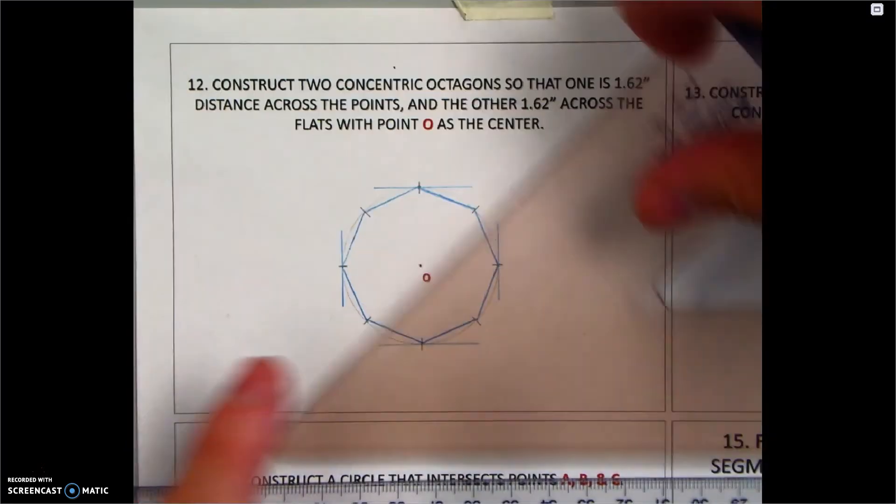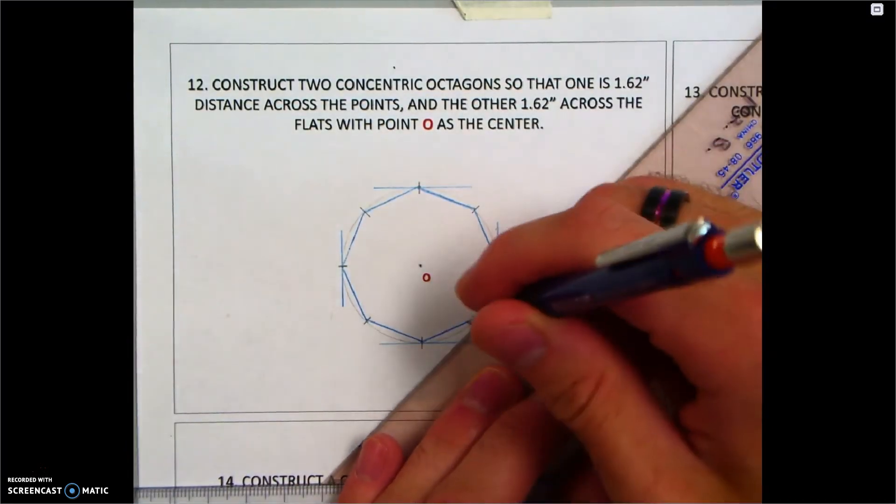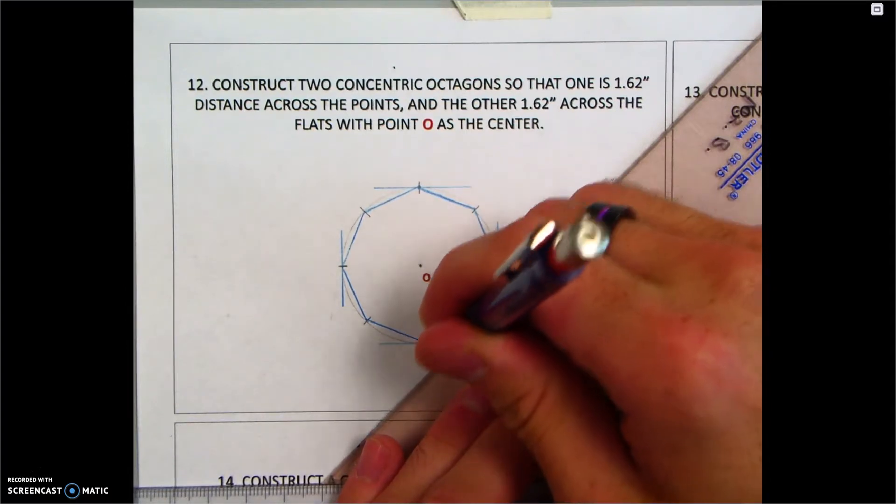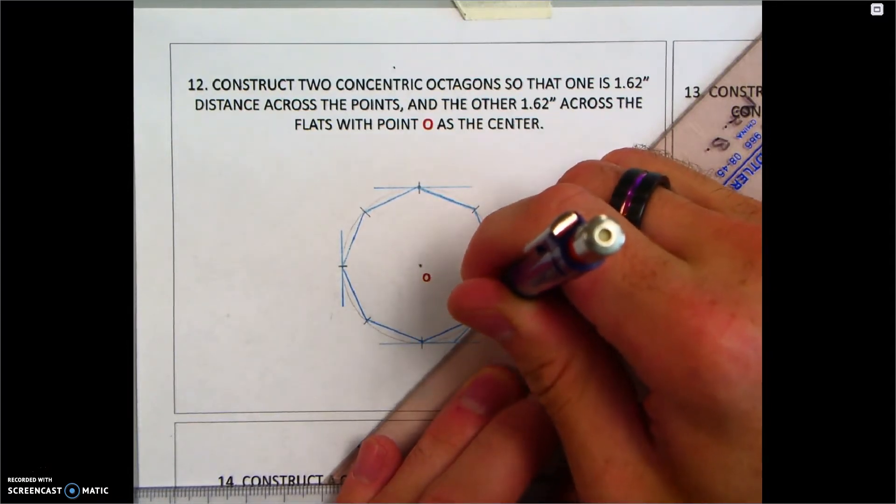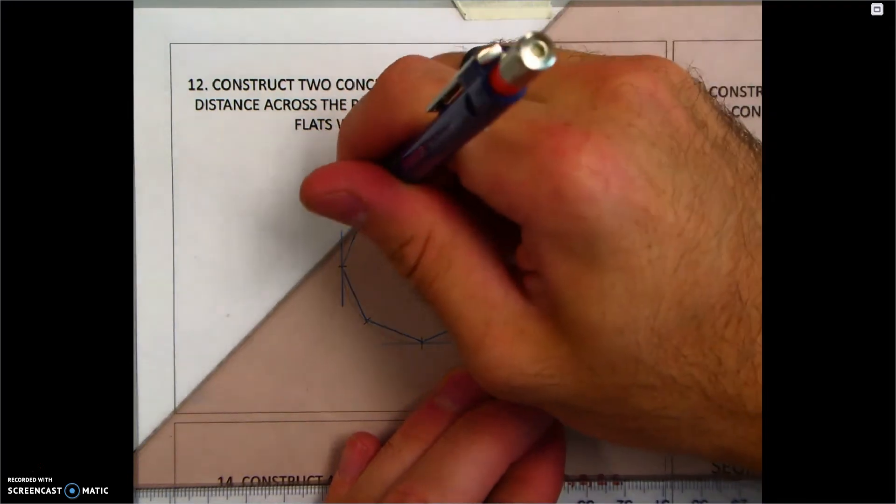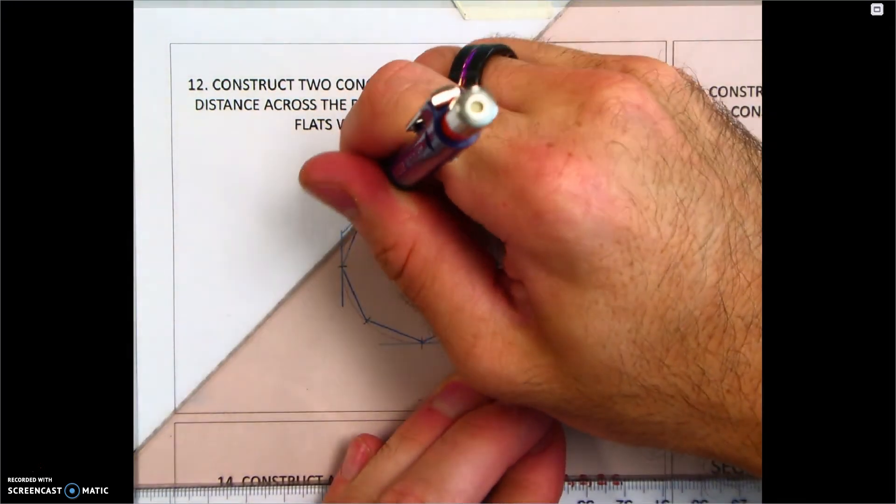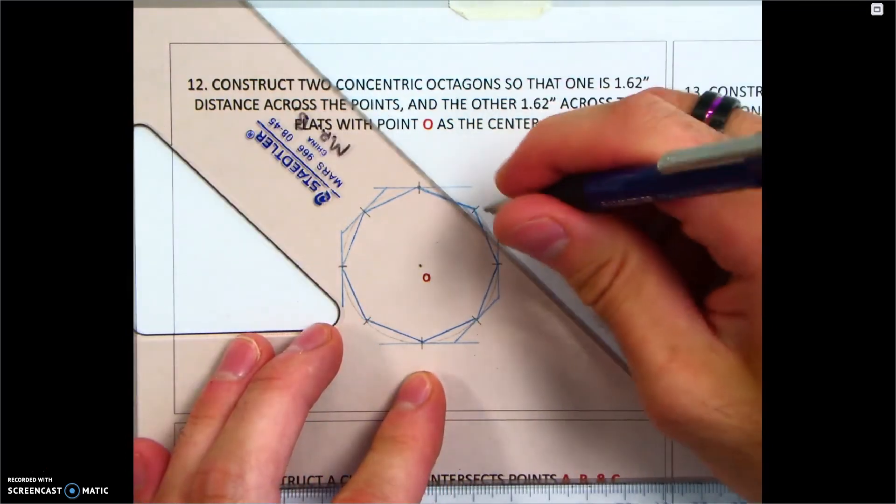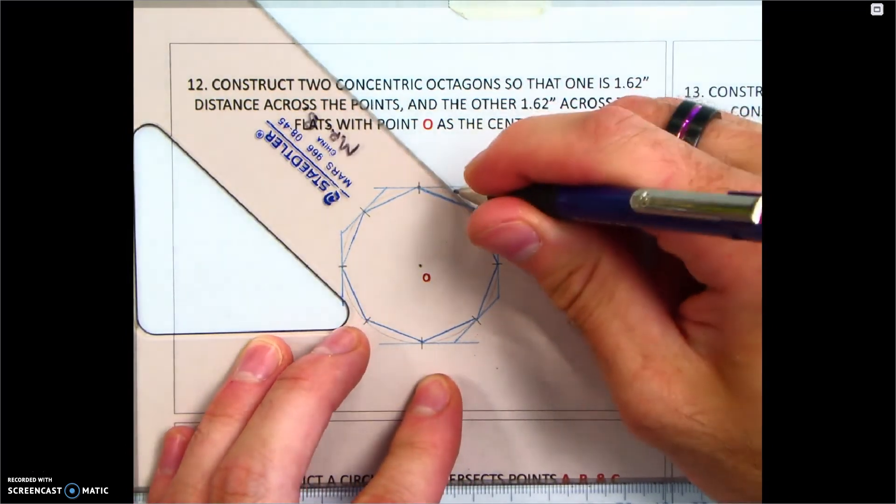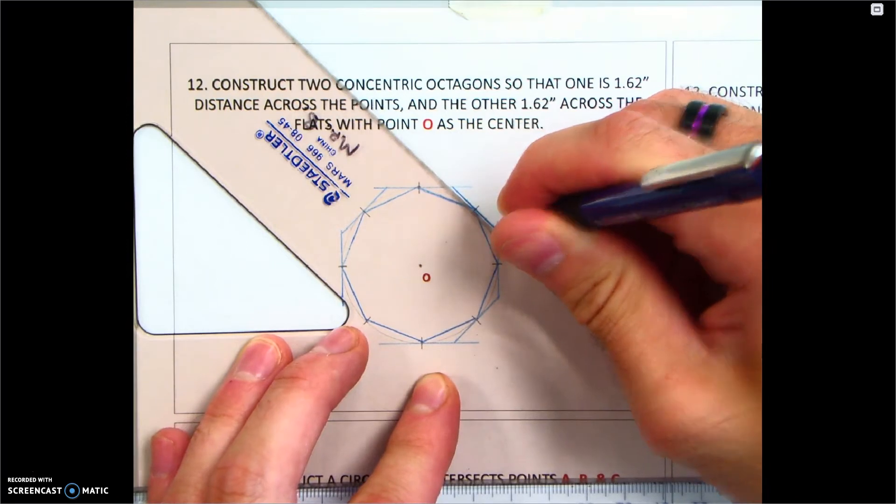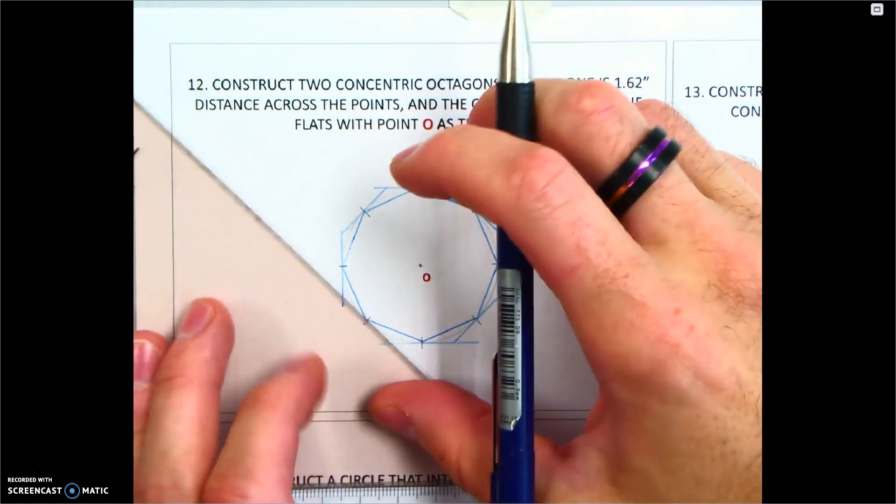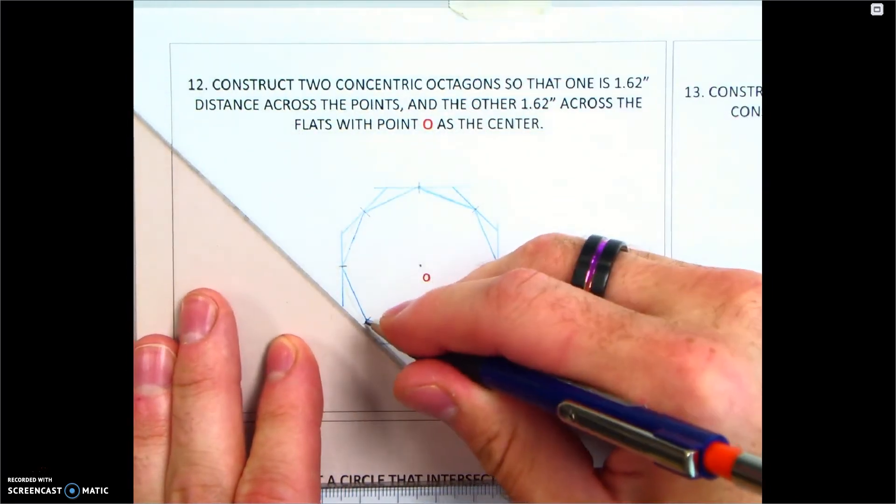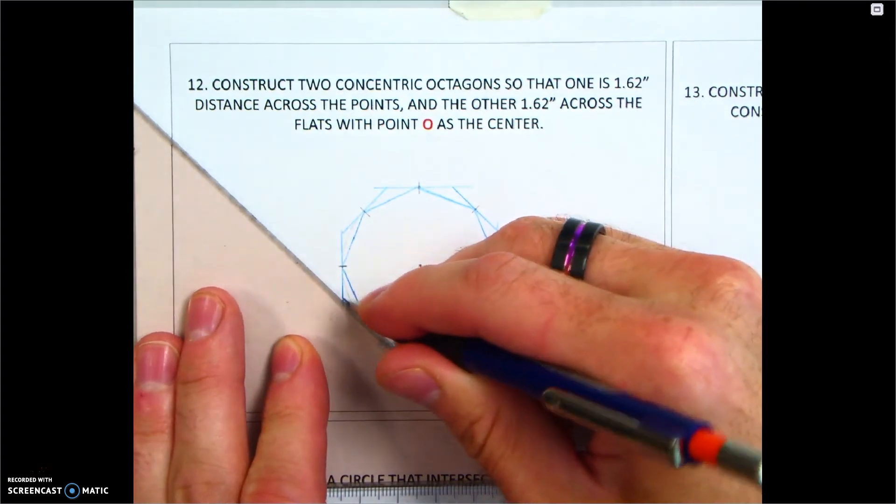Now I use the 45s. Slide it to the edge of the circle, tangent, connect. Slide it over, tangent, connect. Rotate it around, tangent to the circle, connect. And slide it back, still tangent to the circle, and connect the last set.